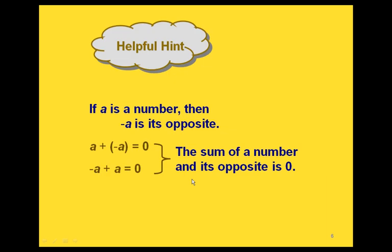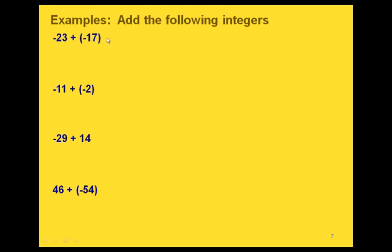We talked about opposites — if you're adding a number and its opposite, you'll always get 0. Let's do some examples. For all of these, you can either use the number line method or the absolute value method, whichever one works better for you.